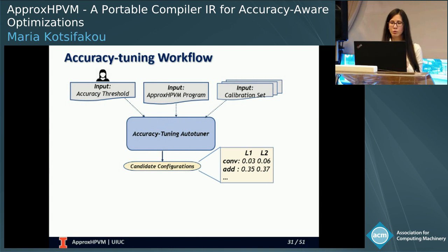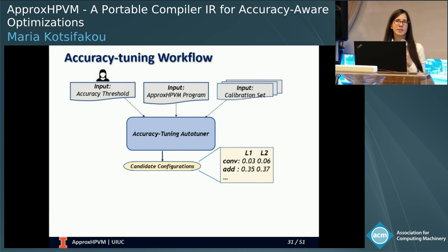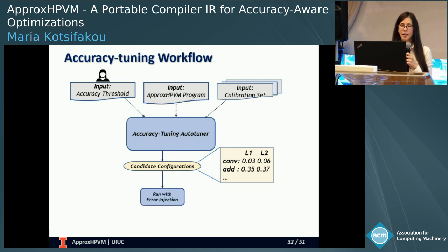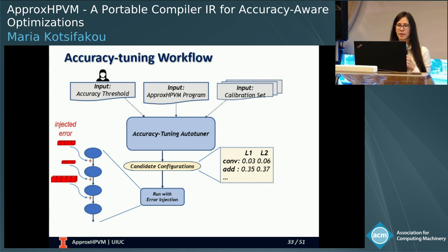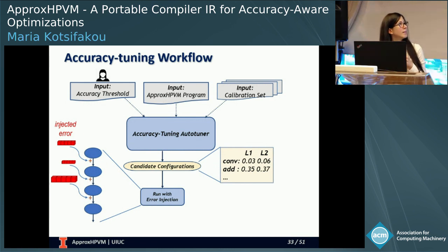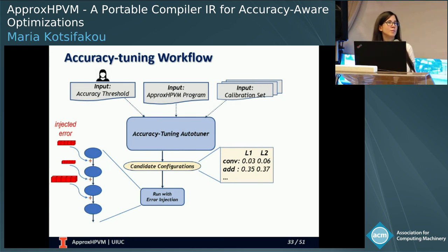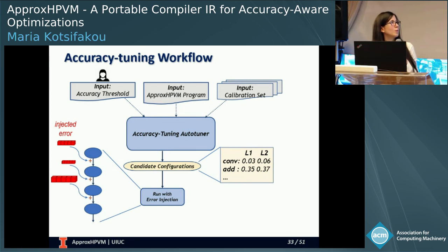This input is provided to an auto-tuner, which generates candidate configurations. To generate a configuration, the auto-tuner assigns values to the approximation metrics L1 and L2 for each tensor operation. Initially these values may be assigned randomly, but as the search progresses, we converge to better configurations. After we have a configuration, we run the ApproxHPVM program with error injection — executing the program for each input in the calibration set and adding error to the output of tensor operations. The error added is statistical and proportional to the error values identified by the auto-tuner.